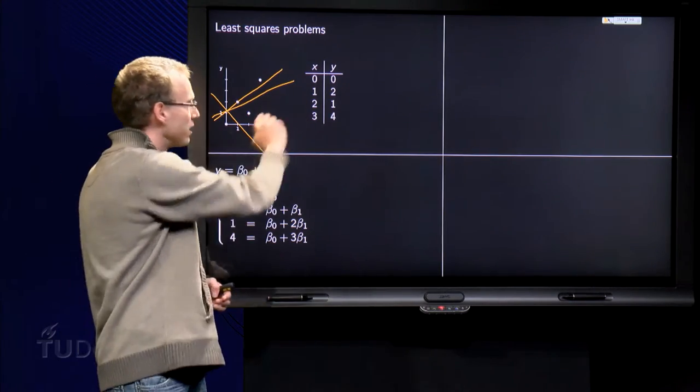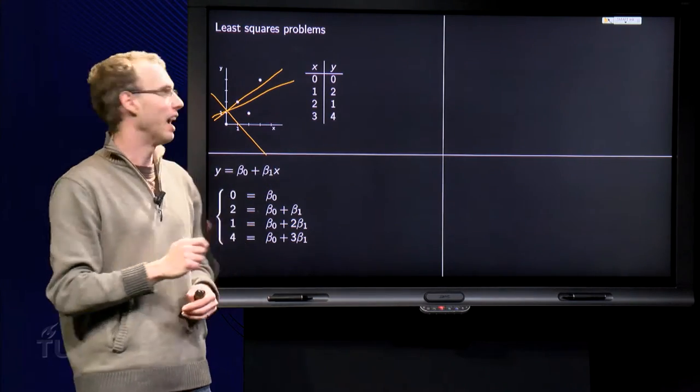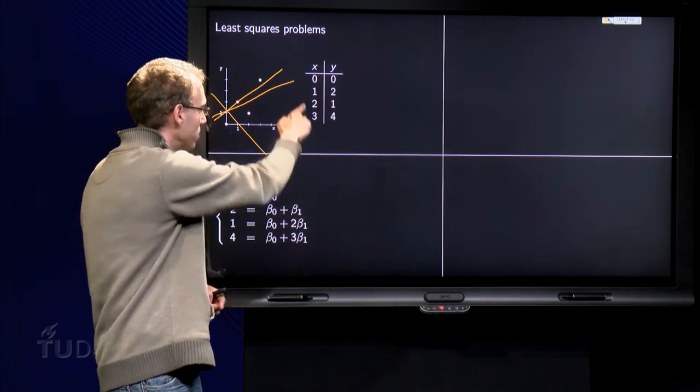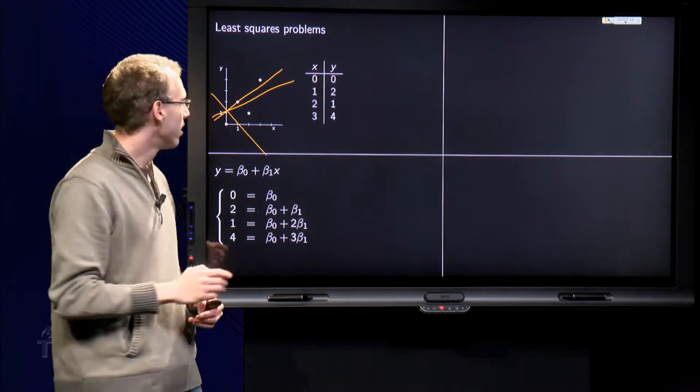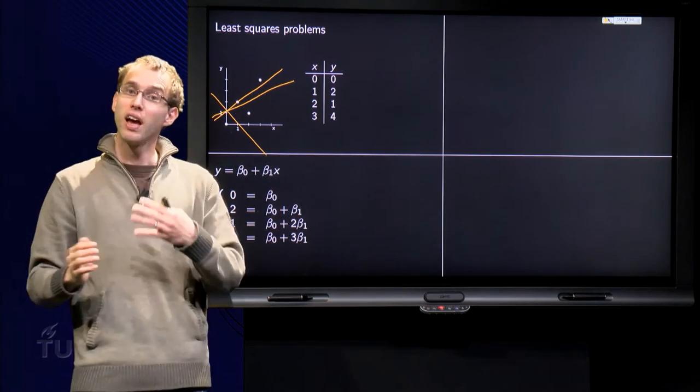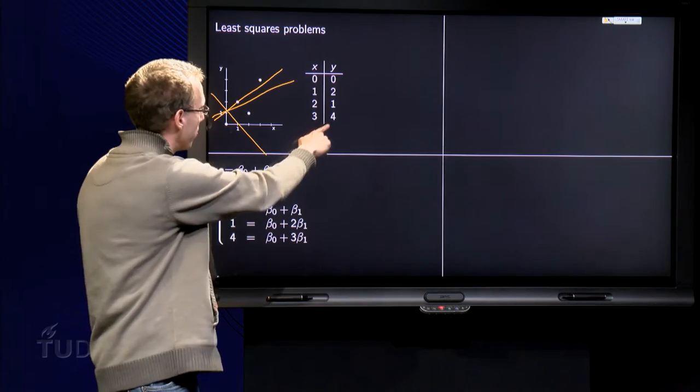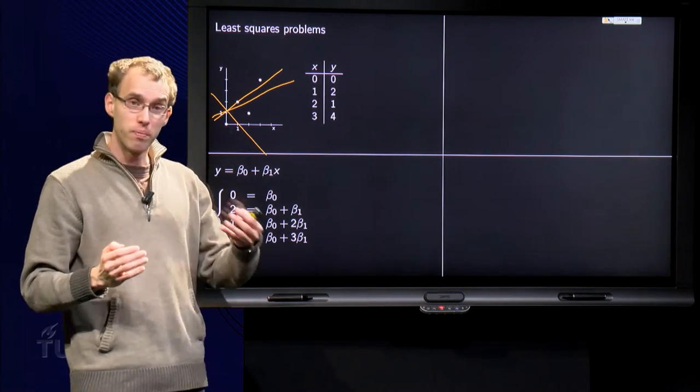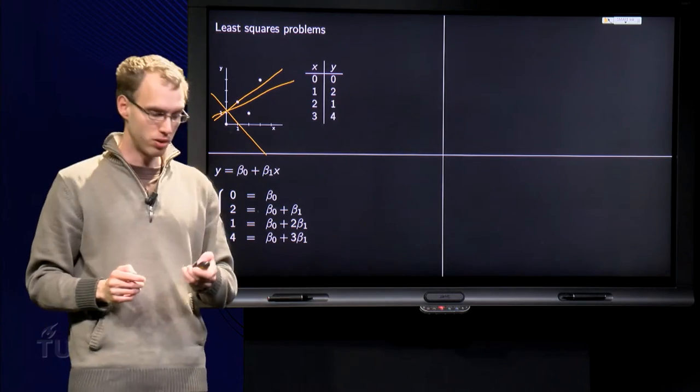And if the second data point would be exactly on the line, we get y equals 2 equals beta 0 plus beta 1 times x equals 1. And for the third data point we have y equals 1 and x equals 2, and for the last data point we have y equals 4 and x equals 3. So we get four equations with two unknowns.